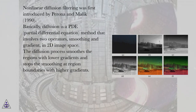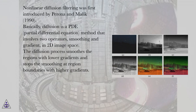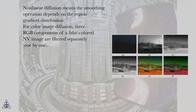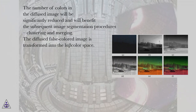Non-linear diffusion filtering was first introduced by Perona and Malik (1990). Basically, diffusion is a PDE (partial differential equation) method that involves two operators, smoothing and gradient, in 2D image space. The diffusion process smooths the regions with lower gradients and stops the smoothing at region boundaries with higher gradients. Non-linear diffusion means the smoothing operation depends on the region gradient distribution. For color image diffusion, the three RGB components of a false-colored NV image are filtered separately, one by one. The number of colors in the diffused image will be significantly reduced, benefiting the subsequent image segmentation procedures of clustering and merging.